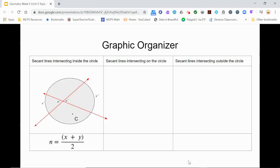We learned in our last video that when secant lines intersect inside the circle, twice the measure of the vertical angles equals the sum of the measures of the intercepted arcs. Or the measure of each vertical angle is half the sum of the measures of the intercepted arcs.